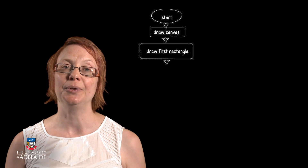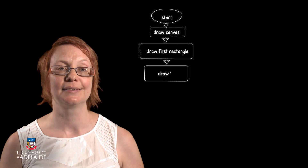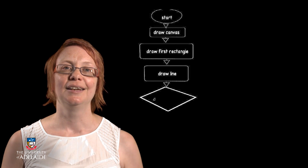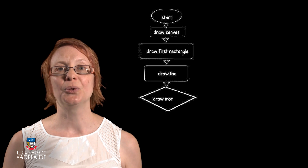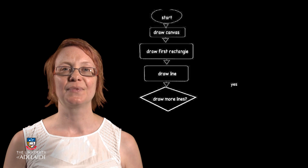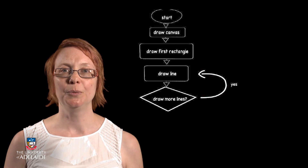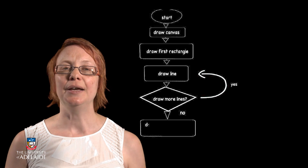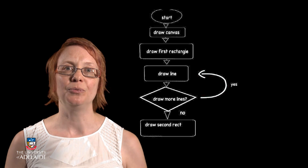First we want to create the canvas. Then we draw the first rectangle. Then we draw the sequence of lines. And then we draw the final rectangle.